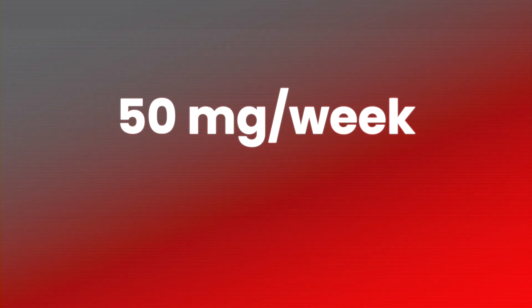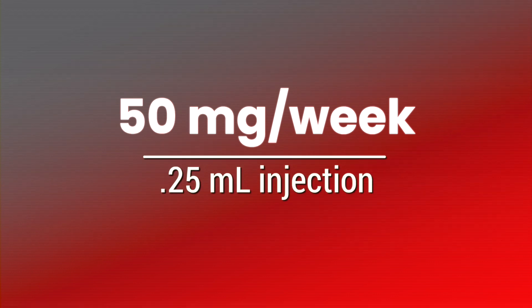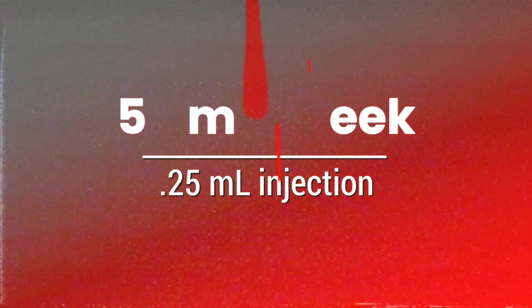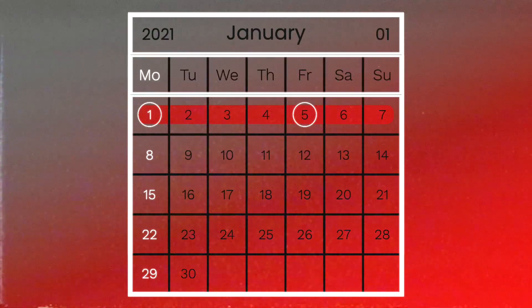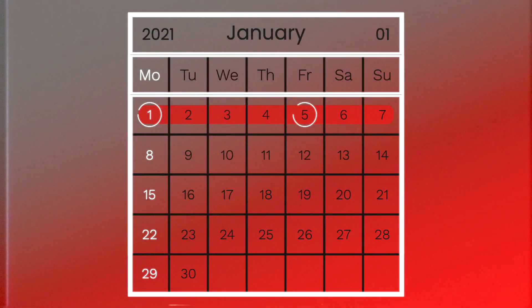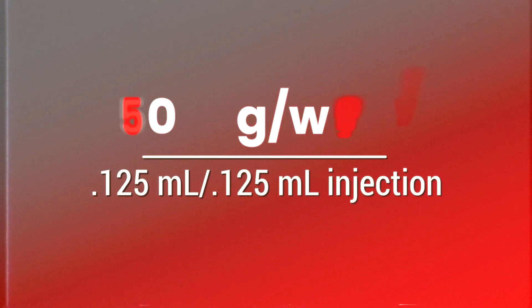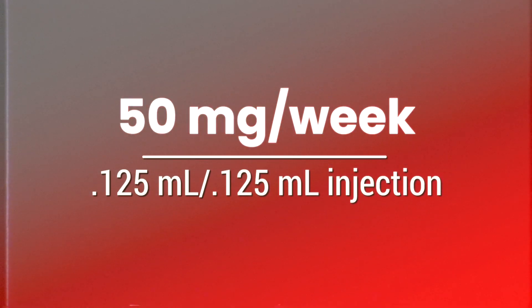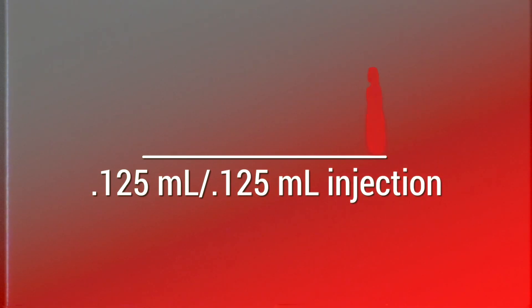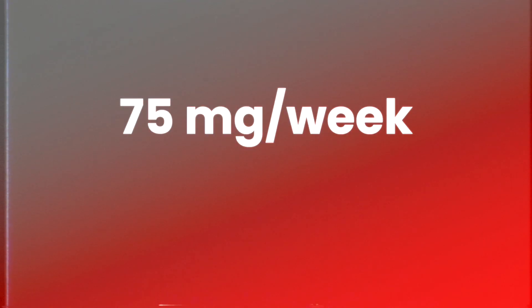Let's say your doctor prescribes an injection dosage of 50 milligrams a week. That means you'll inject 0.25 mLs or cc's of testosterone. Your doctor may also recommend that you split your dose into two injections on two separate days throughout the week. If that's the case, you would inject 0.125 mL on each corresponding day — for example, a Monday and a Friday. The same goes for all the dosages covered here.